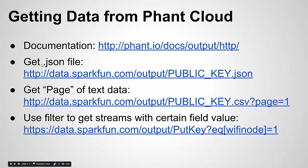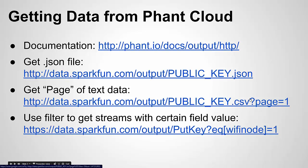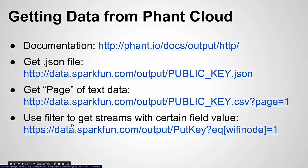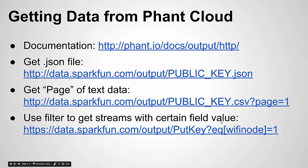Here's an example of how you get a JSON file of data. You use a web address with your public key and append dot JSON for a JSON file, or dot CSV to get a CSV file. If you just want your data in text form, you can use dot CSV with a question mark page equals one, which grabs up to about 250K of comma-separated data in text form that you can parse. They also have filters, so if you don't want to grab all the data you can use greater-than, equal-to, or less-than filters — that's actually what we're going to use in the app.